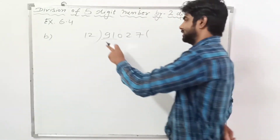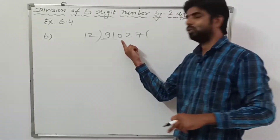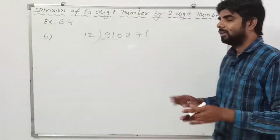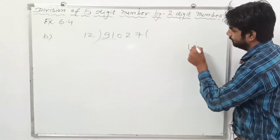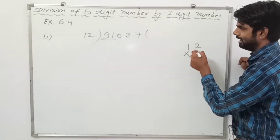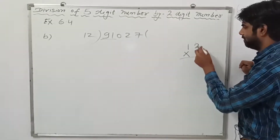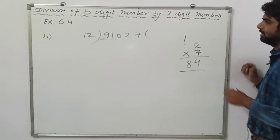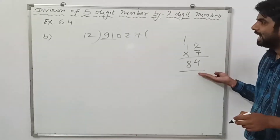From the start, we take two digits. If these digits are greater than 12, there is no need to take a third digit. We will read the table of 12, or you can simply multiply. I will try 7 approximately to get 91. So 12 multiplied by 7: 7 times 2 is 14, carry 1; 7 times 1 is 7, plus 1 is 8 — that gives 84.